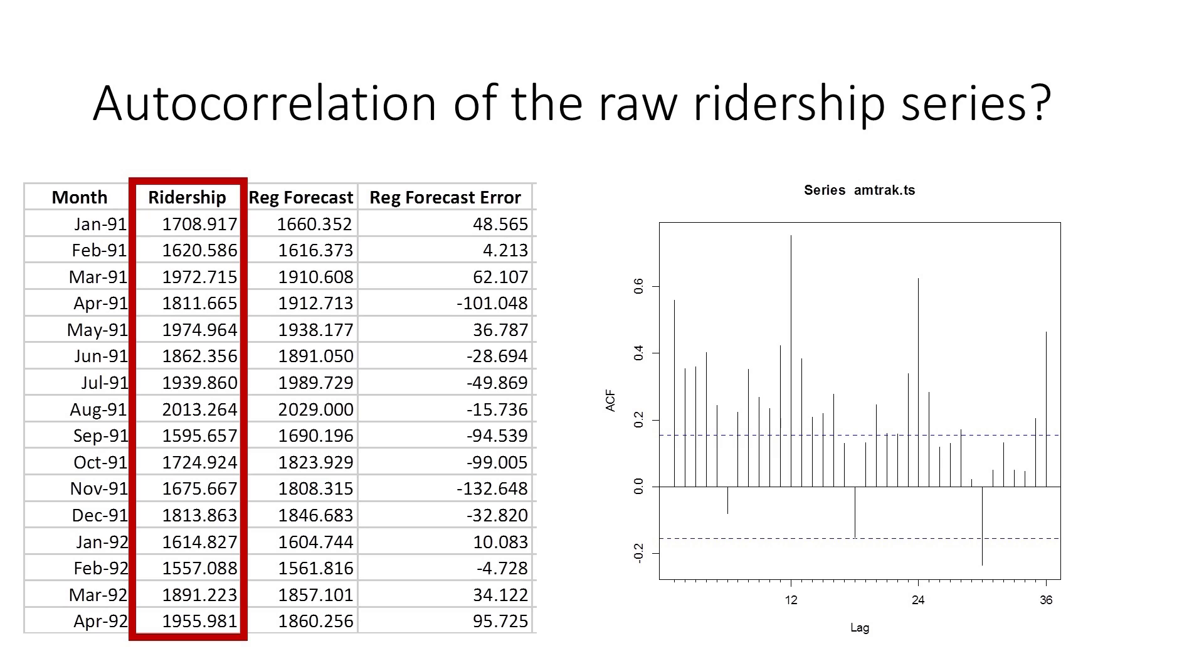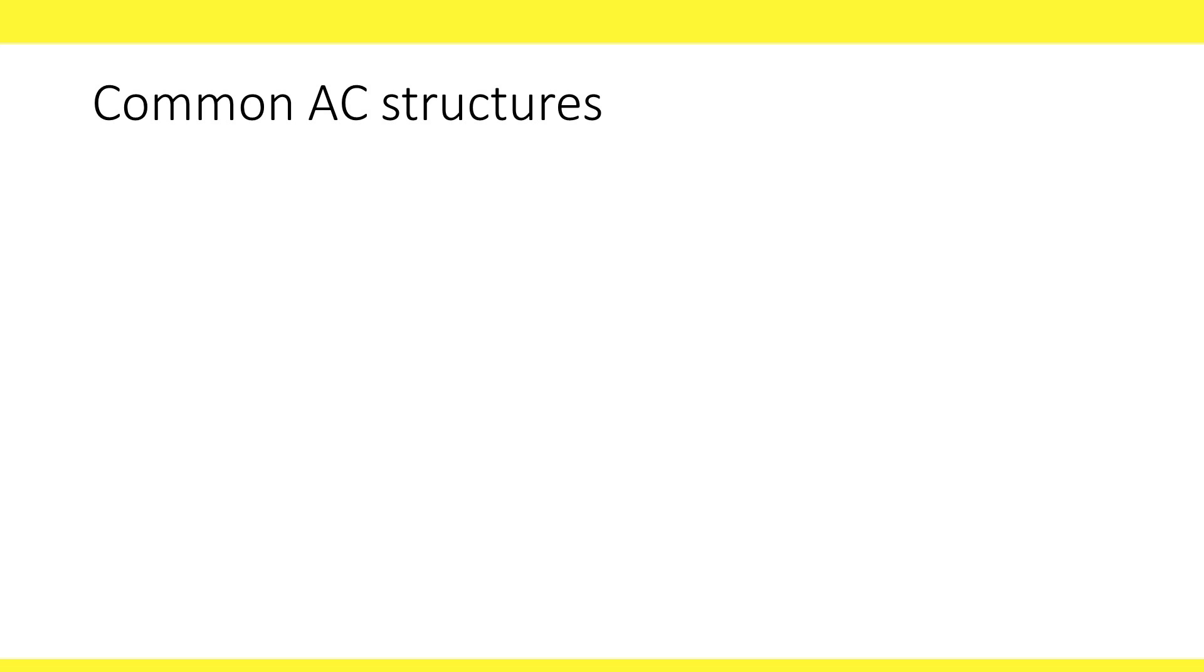We can see a cyclical behavior with largest spikes at lags 12, 24, and 36. There are also negative spikes at 6, 18, 30, although some of them are not significant. Can you guess what is causing this behavior? Looking at the autocorrelation plot can help us detect the series components.